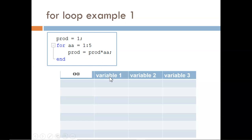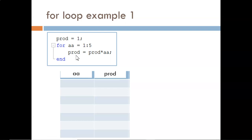I can shrink the table because no other columns will be used. Now we begin to fill in values. Before aa exists, prod is assigned the value of 1.